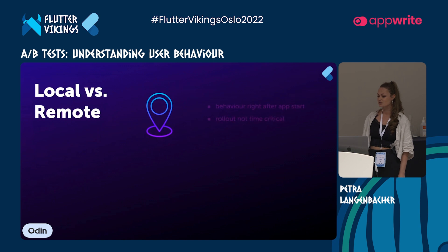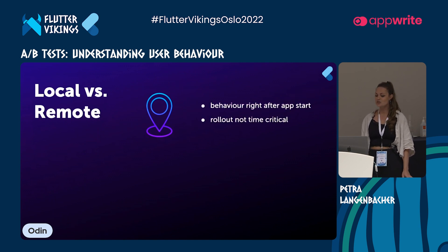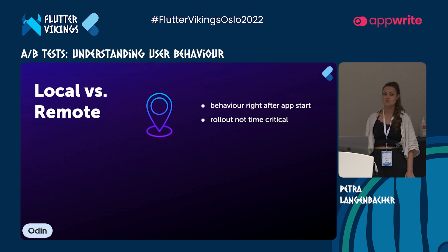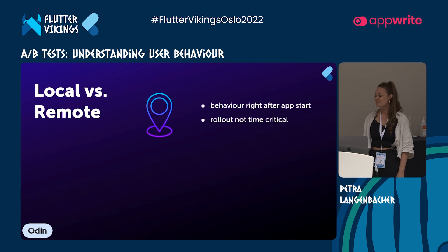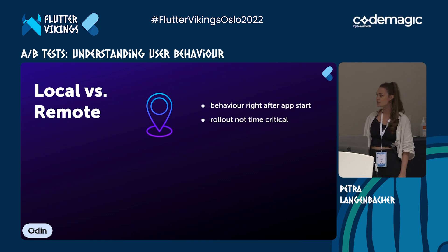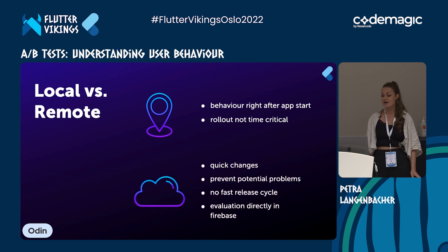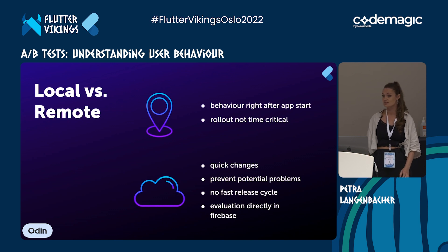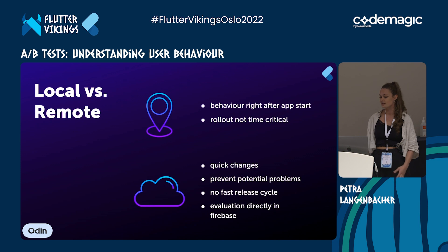Let's look at when to use local tests versus remote tests. If you want to test behavior right after app start, a local test is probably best — for example, we tested different versions of our consent dialog. Because it appears directly after app start, there might not be enough time to fetch new Remote Config values. Local tests also make sense when the rollout of a feature is not time-critical. In most other cases, remote tests are better because you can make quick changes, handle potential problems with a variant, or if you don't have a fast release cycle. Firebase also lets you easily evaluate tests directly in the console.